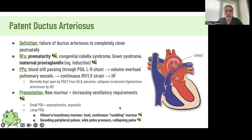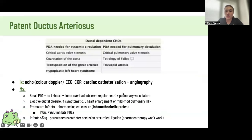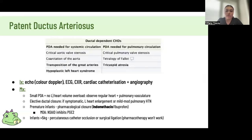If it's a large PDA, the murmur can be described as a machinery murmur — loud, continuous, and rumbling. They also have bounding and collapsing pulses and a wide pulse pressure. A PDA is actually needed in certain defects to ensure oxygenated blood mixing necessary for survival. Management: you don't always need to fix it, especially if it's small. In premature infants you can give NSAIDs, which decrease prostaglandin synthesis and close the duct. Over five kilos or a big PDA requires surgical management.